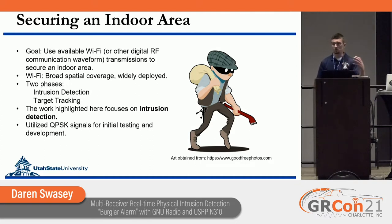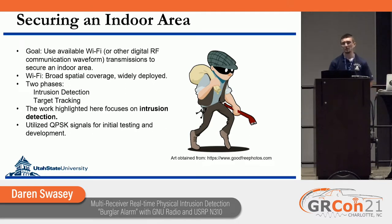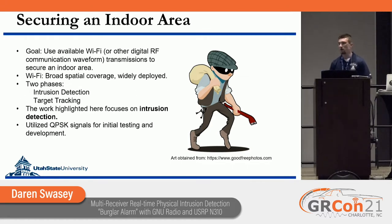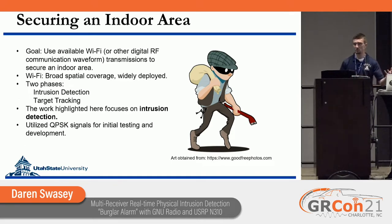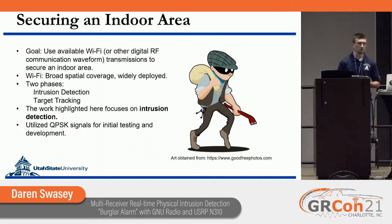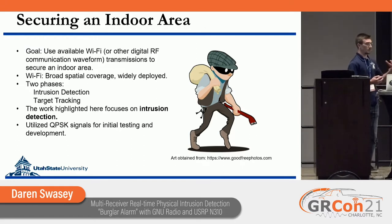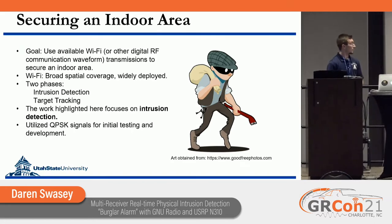The reason we want to work towards using Wi-Fi is because it is available in many if not every building you could possibly be in. It has such broad coverage and acts as a really good signal of opportunity to grab data from and detect if somebody could potentially be intruding. There are two phases to this: the first is intrusion detection, which is what I've been working on, and the second is target tracking — once a target is localized, we need to find out where they continue to be in that area.